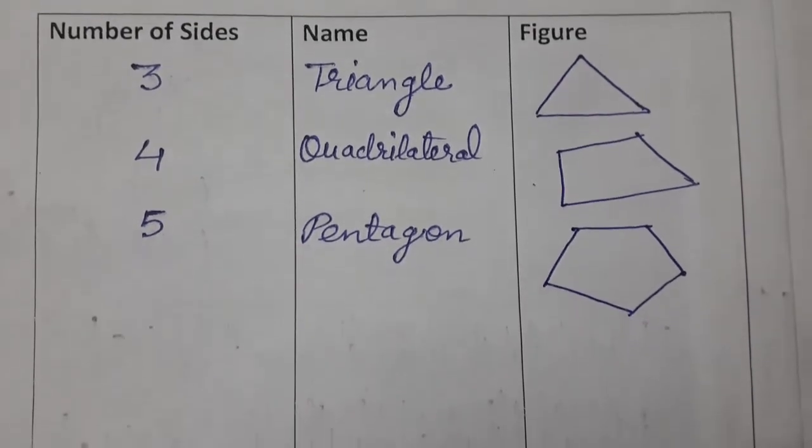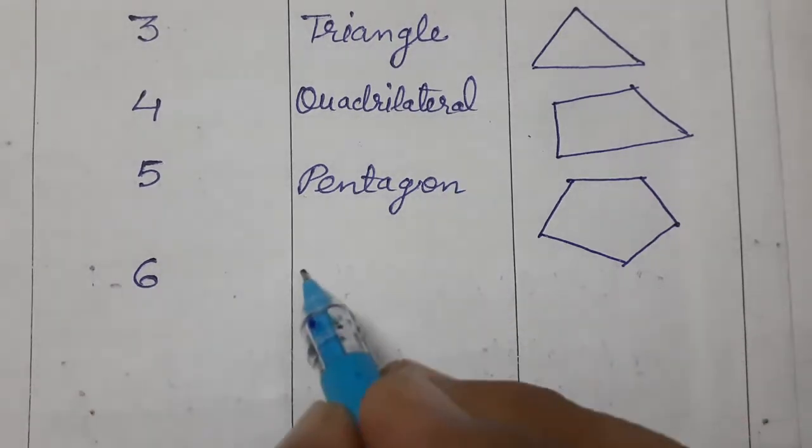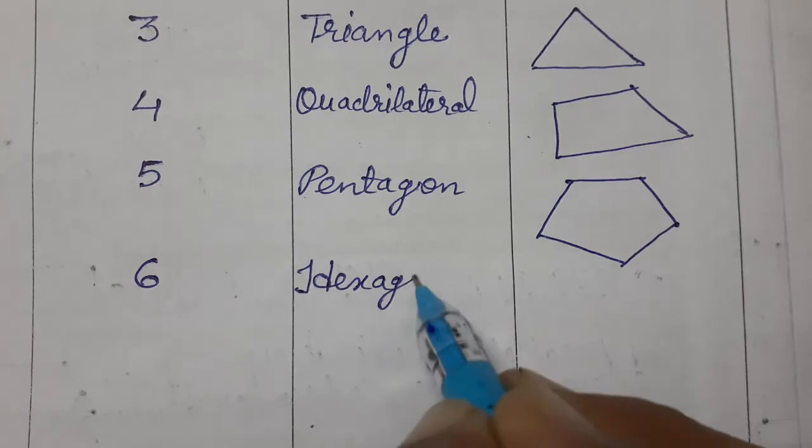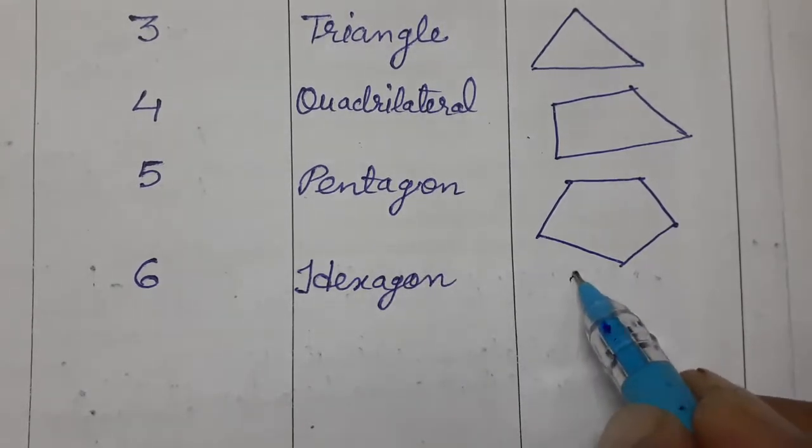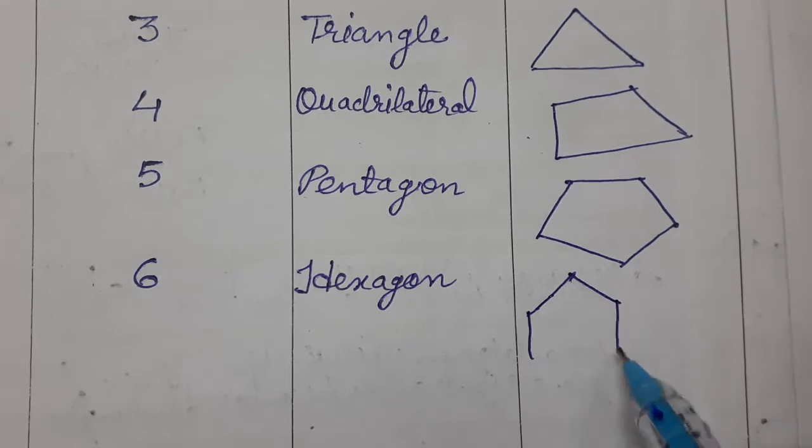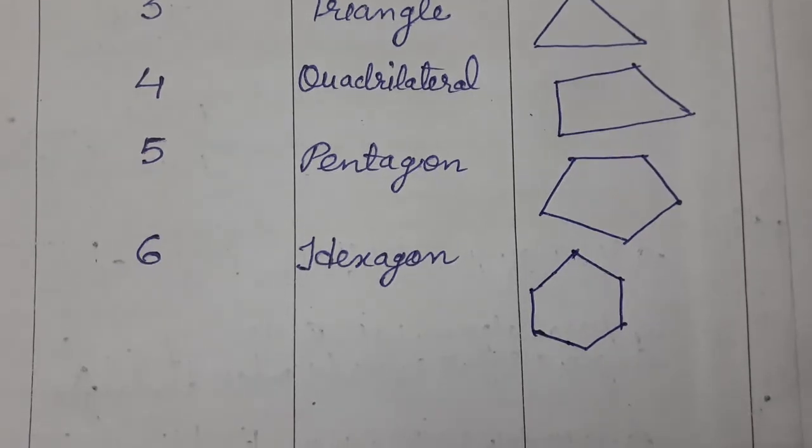Next comes number of sides 6. If number of sides is 6, then we call it a hexagon. Let's make one hexagon: 1, 2, 3, 4, 5, and this is 6. So 6 sides is called hexagon.